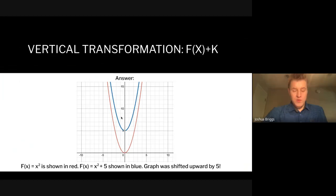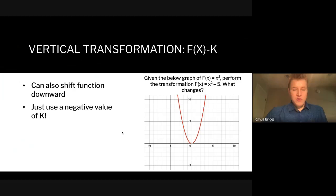The answer is that you take the graph of x² and simply shift it up five along the y-axis — that's your first translation. The shape is exactly the same; we just moved it up five. Now let's do the antithesis: a downward translation. This is when you add a negative value or subtract a positive value. Here we're subtracting five, so k equals negative five.